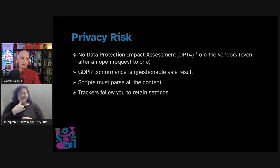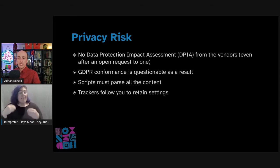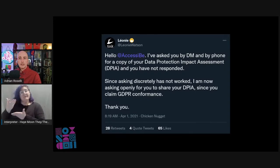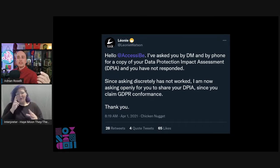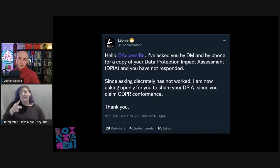The claims of no privacy risk are spurious at best. A Data Protection Impact Assessment, or DPIA, is a process to help you identify and minimize data protection risks of a project. You must do a DPIA for processing information likely to result in high risk to individuals. The vendors do not provide one. As a result, any claimed GDPR compliance is in question. Remember that these overlay scripts must parse all the content on the page, essentially reading what you are surfing. Some of them keep your settings from site to site by setting tracking cookies. Leonie Watson publicly asked Accessibee by DM and by phone for a copy of their DPIA with no response — asking openly since discreet requests had not worked — and it has been more than a year.